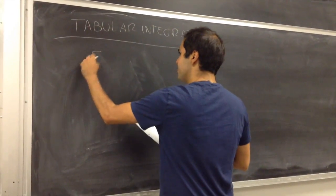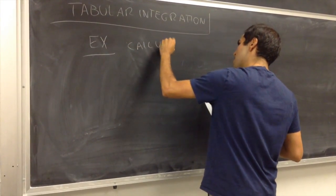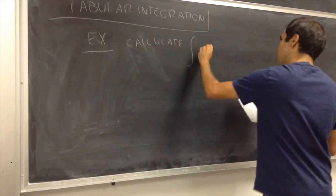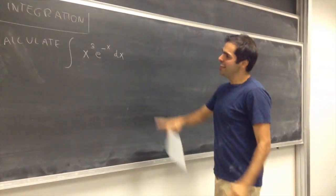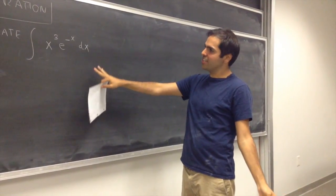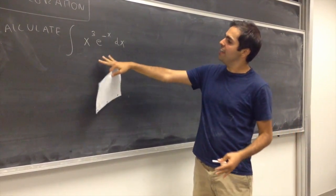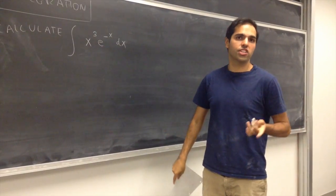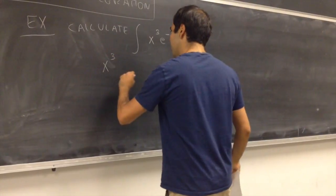Okay, so for example, let's calculate the integral of x cubed e to the minus x dx. And this is called tabular integration because we'll write stuff down in a table and it's basically just many integrations by parts at the same time. So, how do you do this?